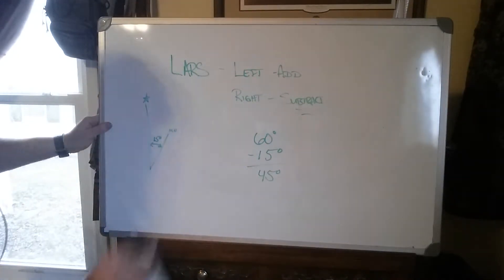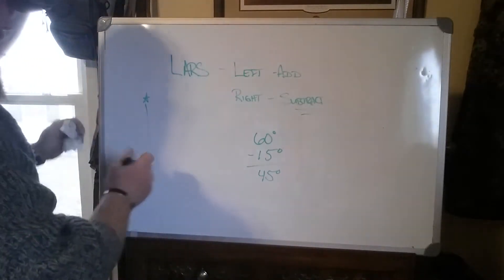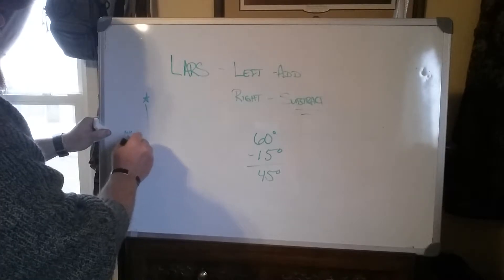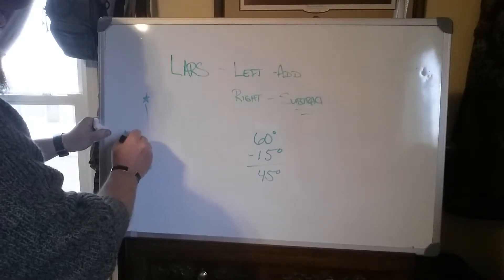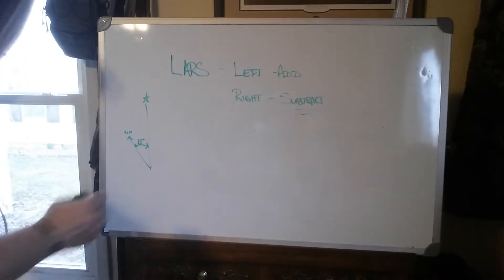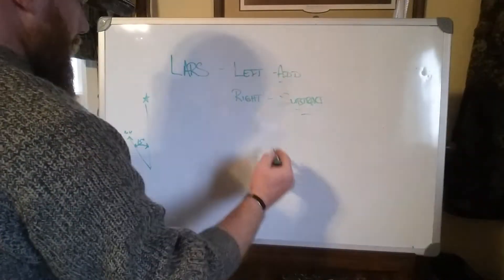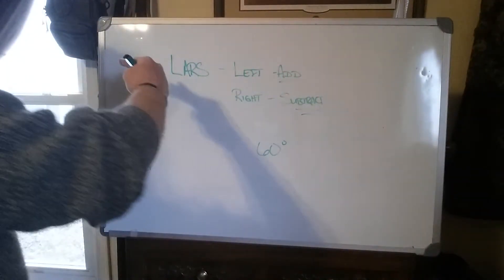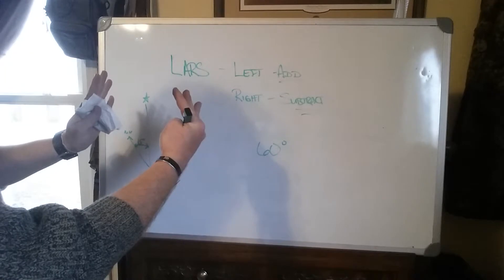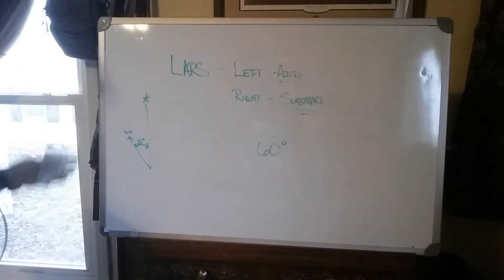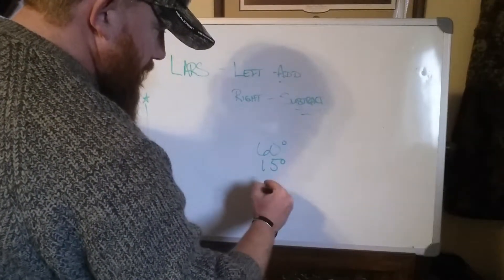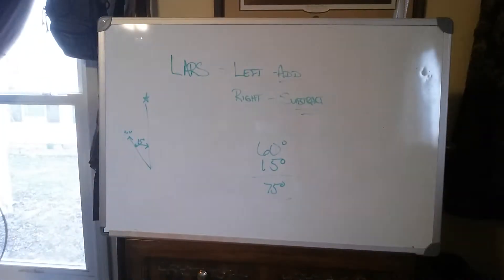Now say your magnetic declination is 15 degrees west. So now what are you going to do? This is to the left, so you're going to add. Say you want to go 60 degrees — to compensate your compass back to true north and figure out the direction you really need to go, you're going to add 15 degrees. Then you're going to travel at 75 degrees.